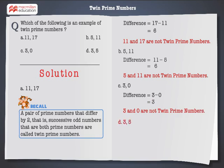Next, 3 and 5. Here the difference between 3 and 5 is 2. Hence 3 and 5 are twin prime numbers.